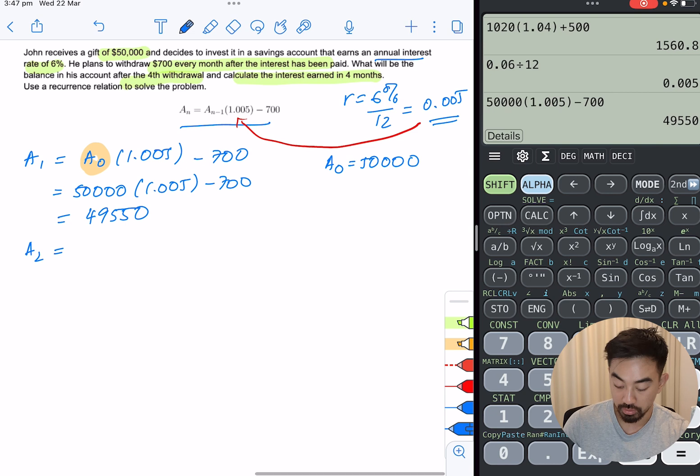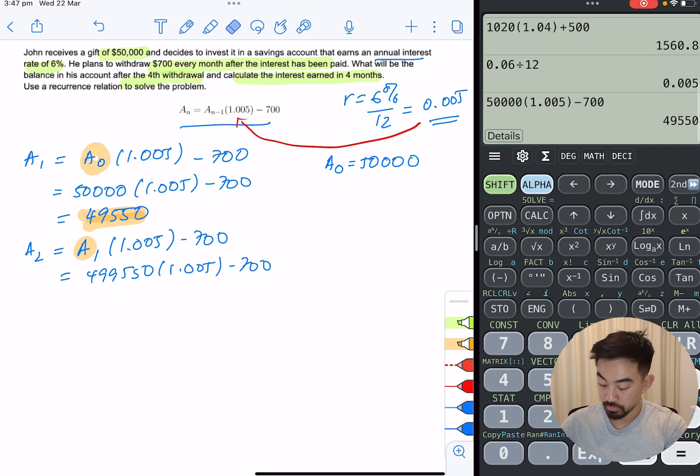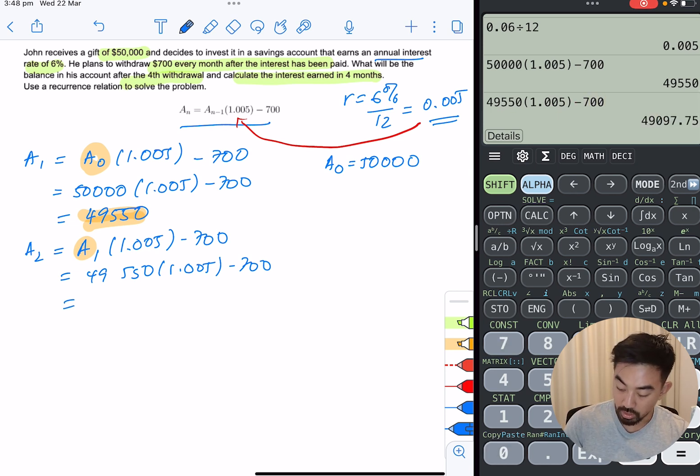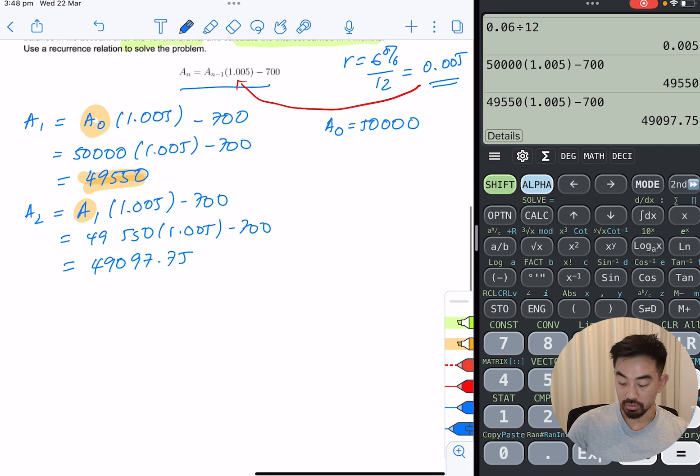Now A2. So we're moving on to the second month, which is going to be the month before. So A1, times 1.005 minus 700. Well, what's A1? Well, A1 we just found is this. $49,550 times your rate minus 700. Too many nines. All right. So that's going to be $49,097.75. Second month down, two more to go.